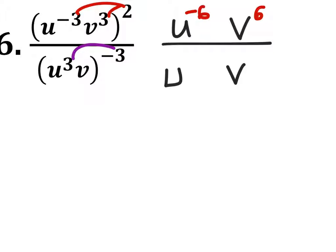Negative 3 times 3 would be negative 9. And that's v to the power of 1, so negative 3 times 1 is negative 3.